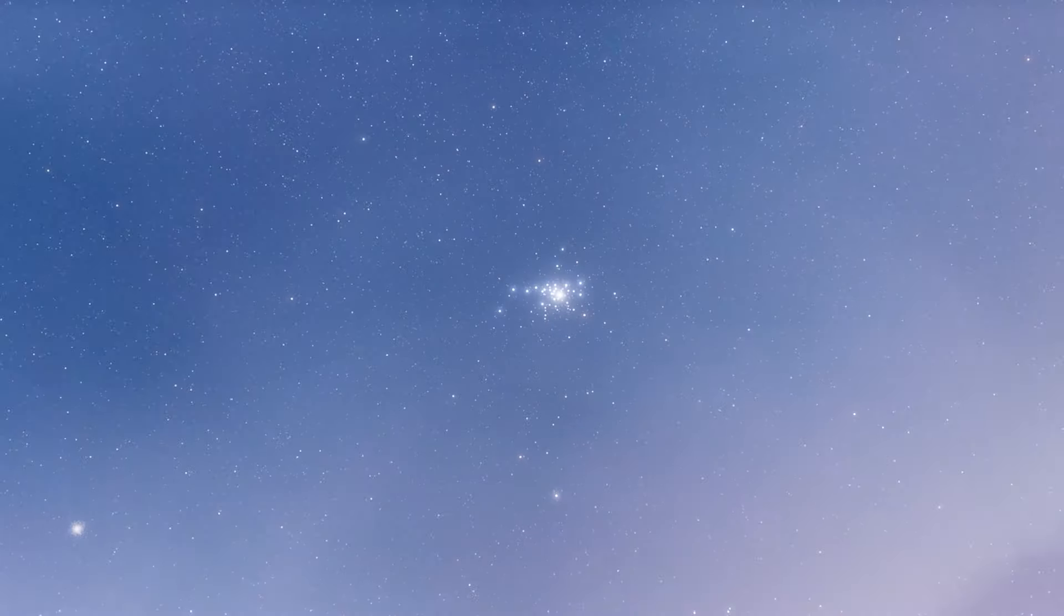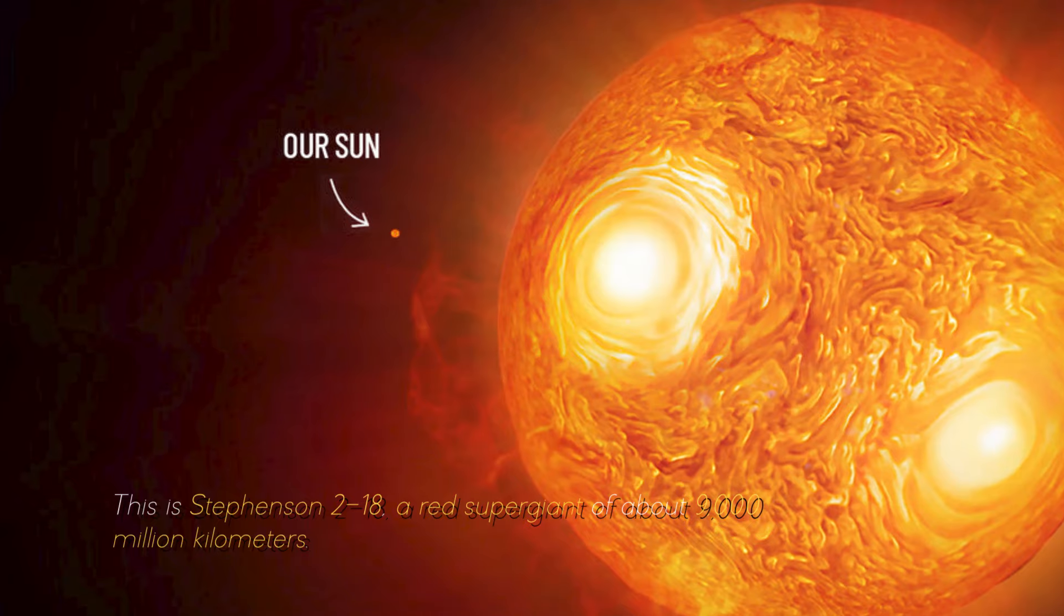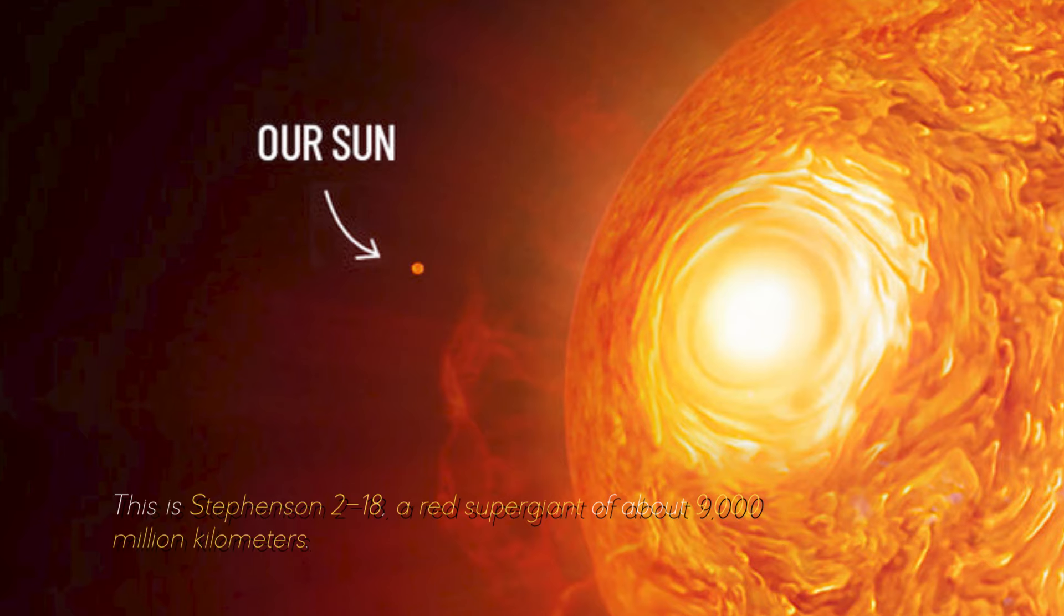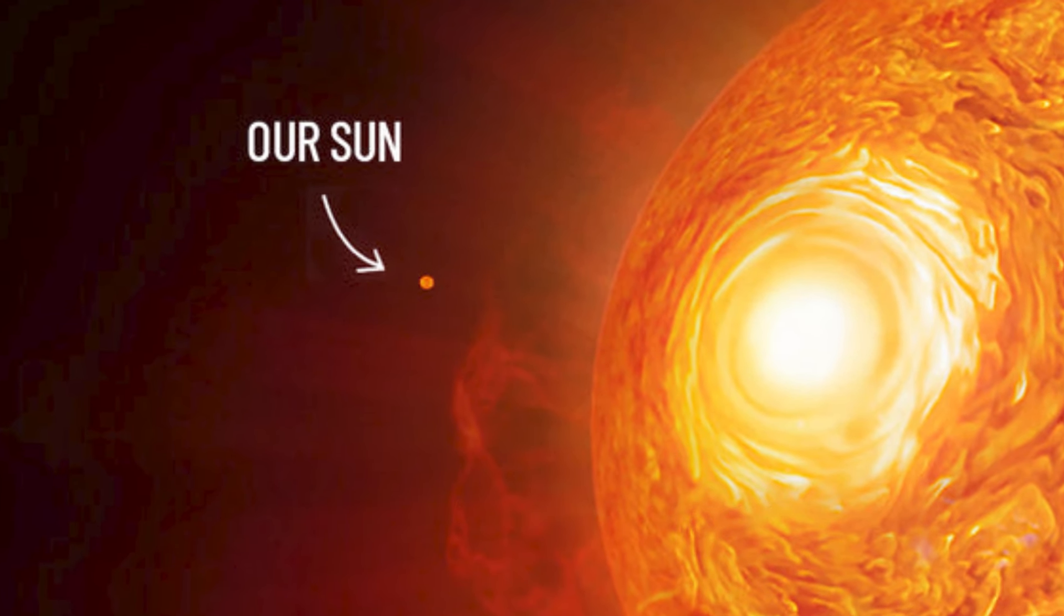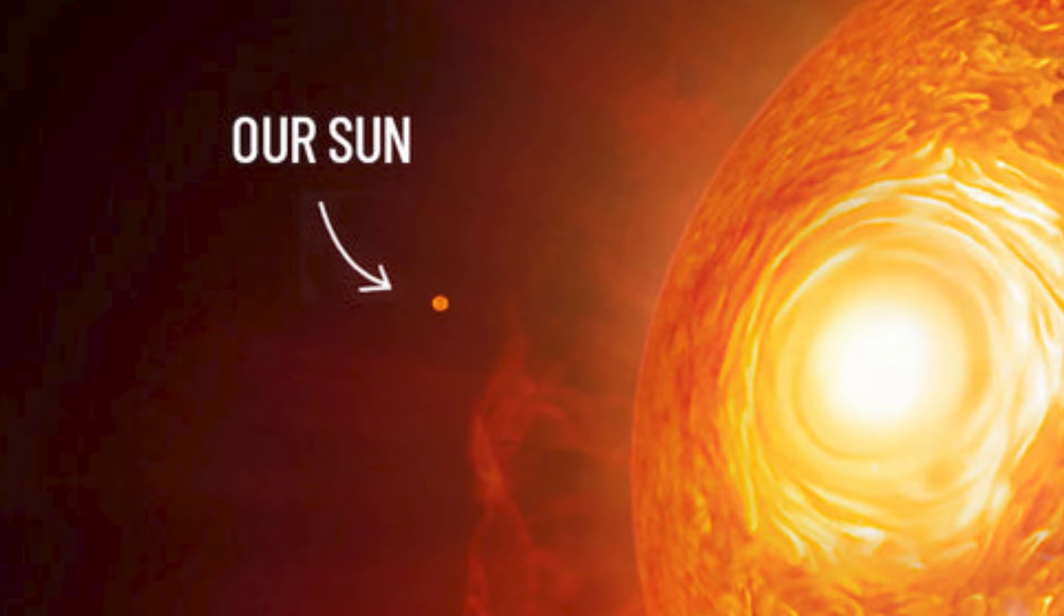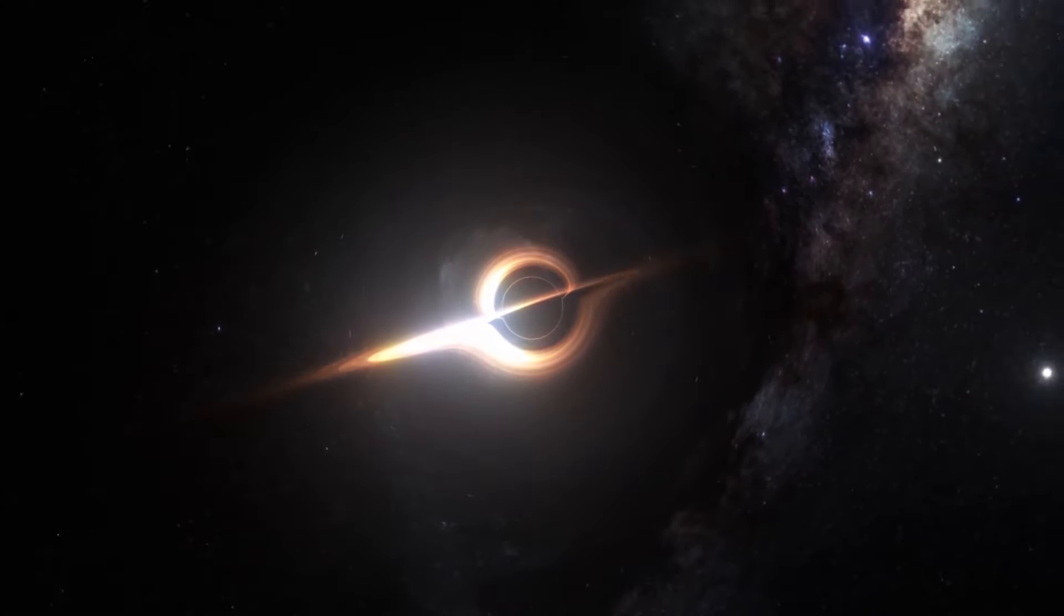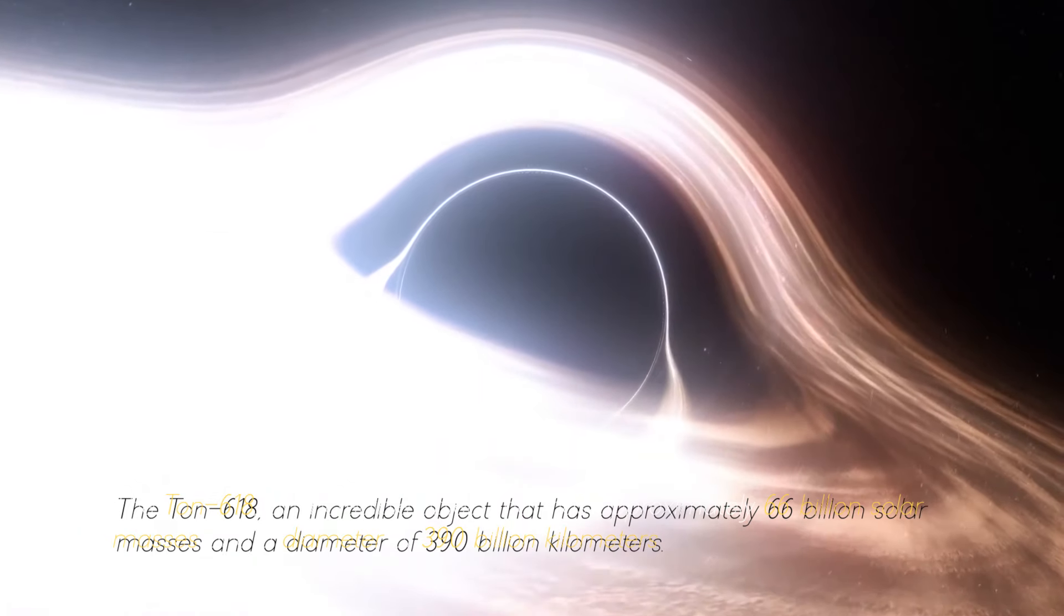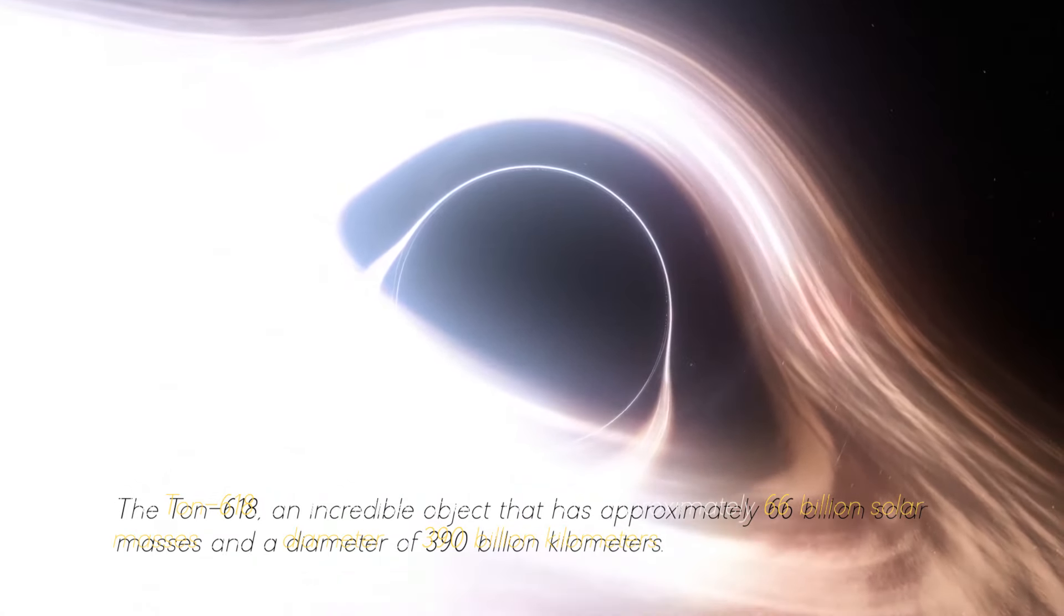Even our sun would also look small if we compare it with the largest star in the universe. This is Stevenson 218, a red supergiant of about 9,000 million kilometers, which looks like this in front of our star, something really spectacular. Not everything ends here. This star cannot be compared with the most massive black hole in our cosmos, the Ton 618, an incredible object that has approximately 600 billion solar masses and a diameter of 390 billion kilometers.